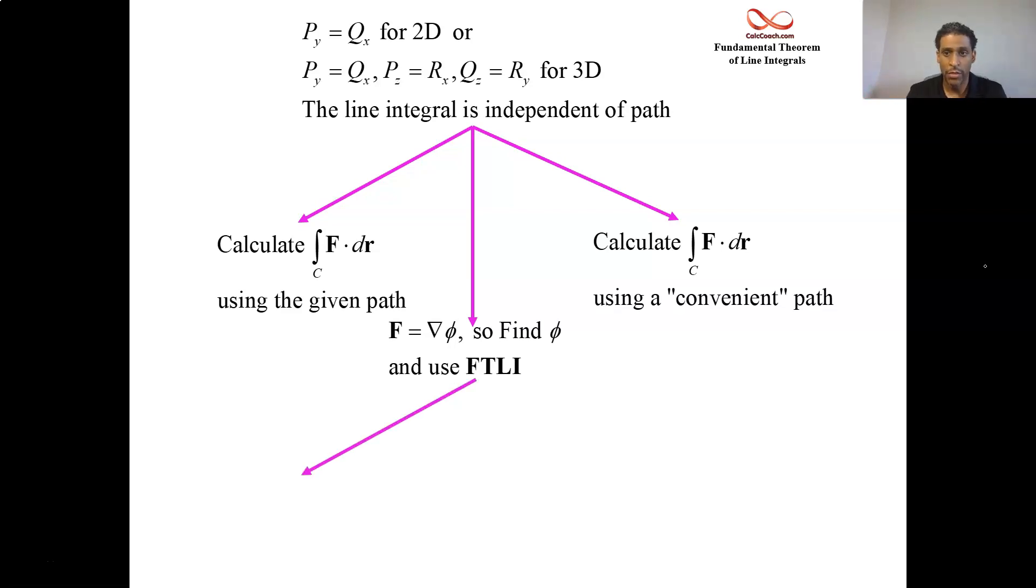When it's time to find φ, you have options. You could integrate each of these, integrate p with respect to x, integrate q with respect to y, integrate r with respect to z. You could integrate all these guys and then you have to make a detailed argument about the extra functions that come in from the plus the constant part.